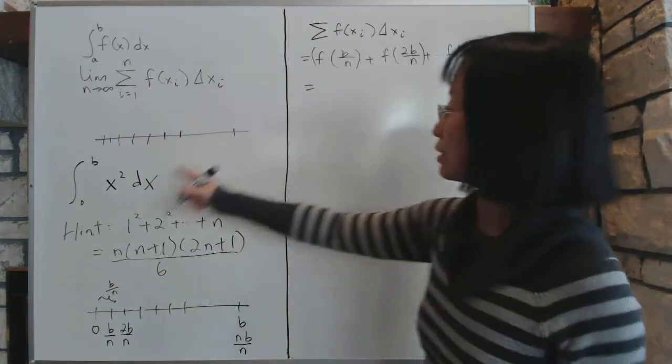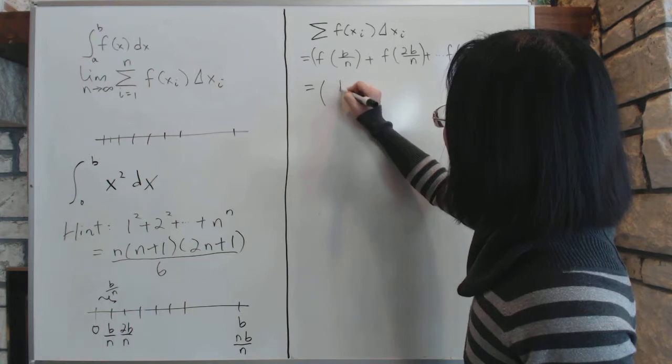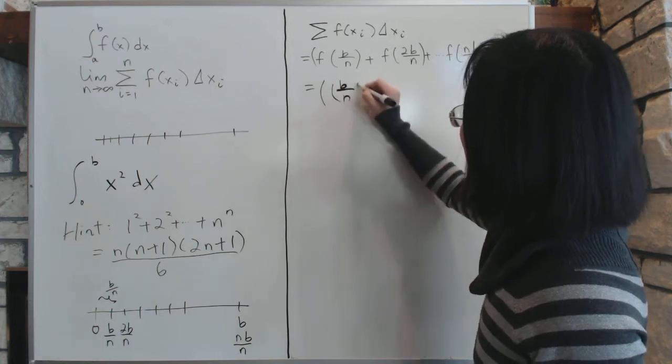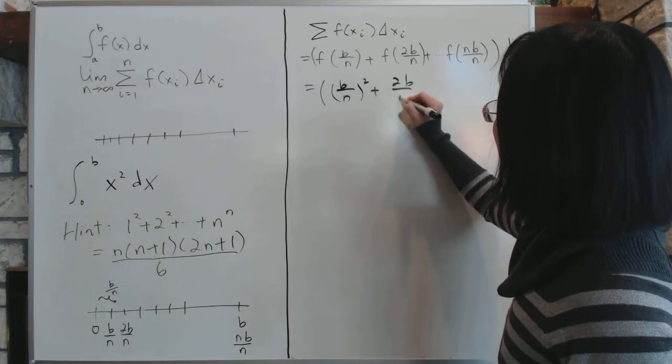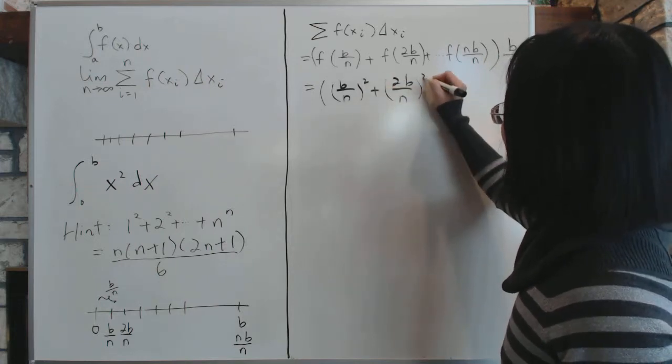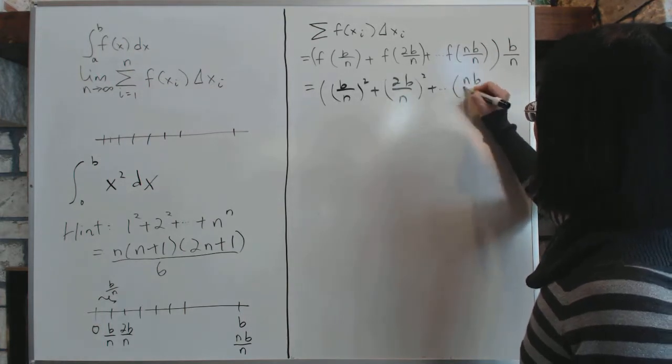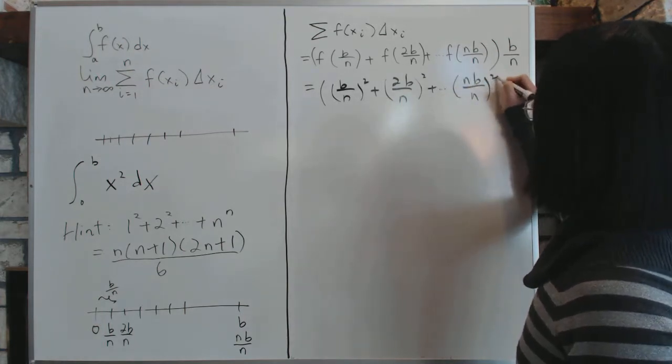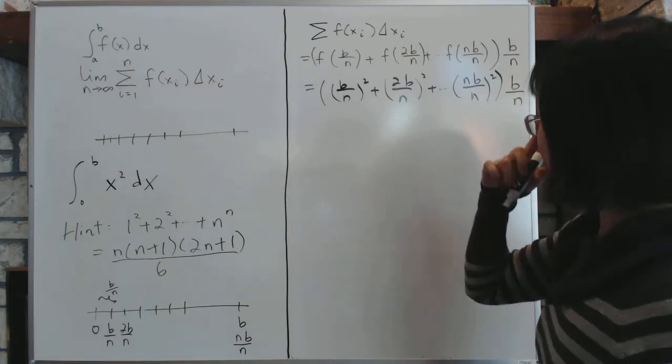And what is that? Being that f is just x squared, it becomes (b over n) squared plus (2b over n) squared, and so on, all the way up to (nb over n) squared, the whole thing times b over n. So that's our summation.